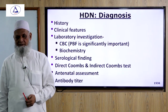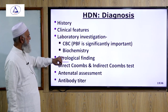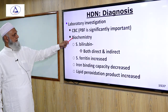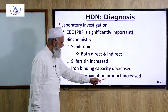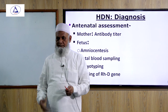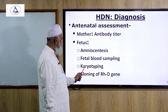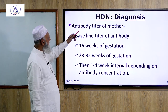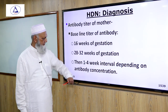Diagnosis of hemolytic disease of the newborn includes history, clinical features, and laboratory investigations such as CBC and biochemical tests. Biochemistry shows elevated bilirubin (both direct and indirect), increased ferritin, increased iron-binding capacity, and increased lipid peroxidation products. Serological findings include direct and indirect Coombs test. Antenatal assessment includes maternal antibody titer — measured at baseline, 16 weeks gestation, 28–30 weeks gestation, then at 1–4 week intervals depending on antibody concentration — amniocentesis, fetal blood sampling, karyotyping, and probing of the RHD gene.